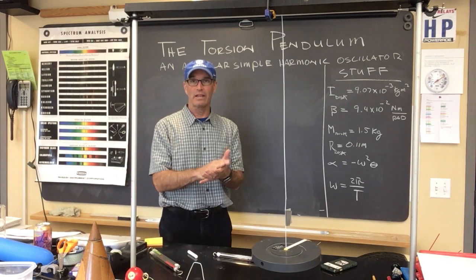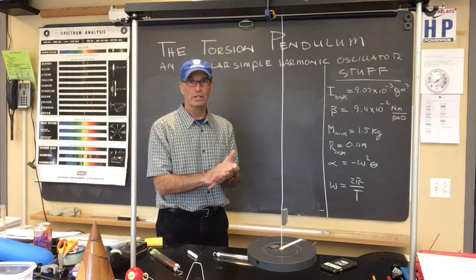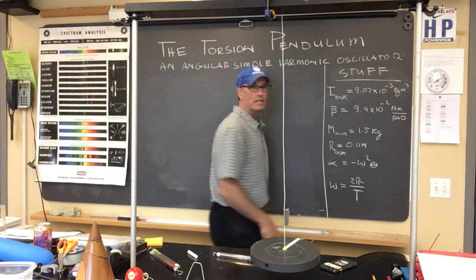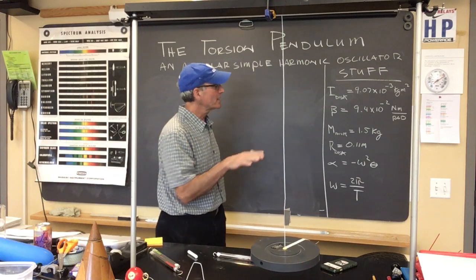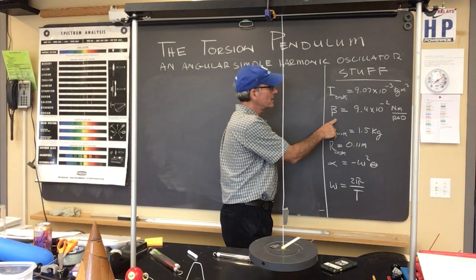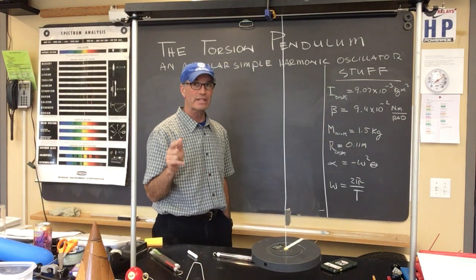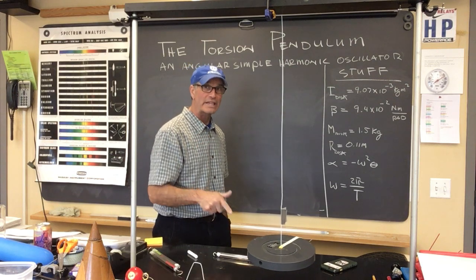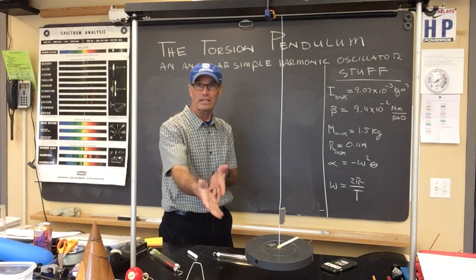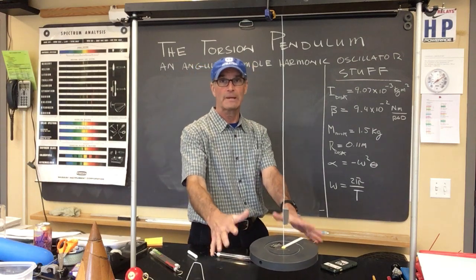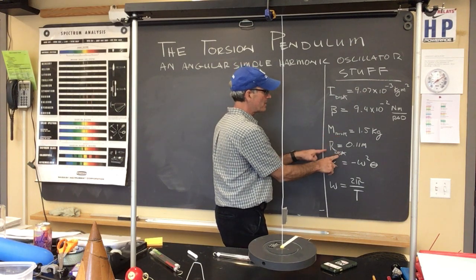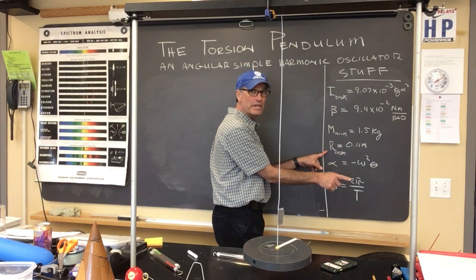To ease the pain of this particular derivation, here we have the rotational inertia of the disc: 9.07 times 10 to the negative 3 kilogram meters squared. We have the torsion constant beta: 9.4 times 10 to the negative 2 newton meter per radian. These come from actual values I collected based on this apparatus. The mass of the disc is 1.5 kilograms, and the radius of the disc is 0.11 meters.